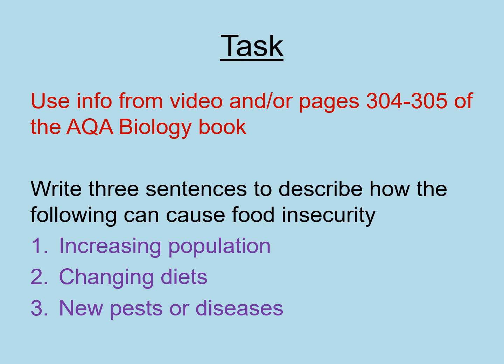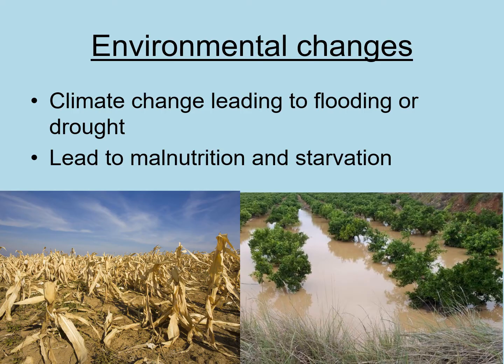Here is your first task. Using information from the video and pages 304–305 of your AQA Biology book on Caboodle, write three sentences describing how each of the following can cause food insecurity: an increasing population, changing diets, or new pests or diseases. Pause the video and write at least one sentence for each, then press play when ready.